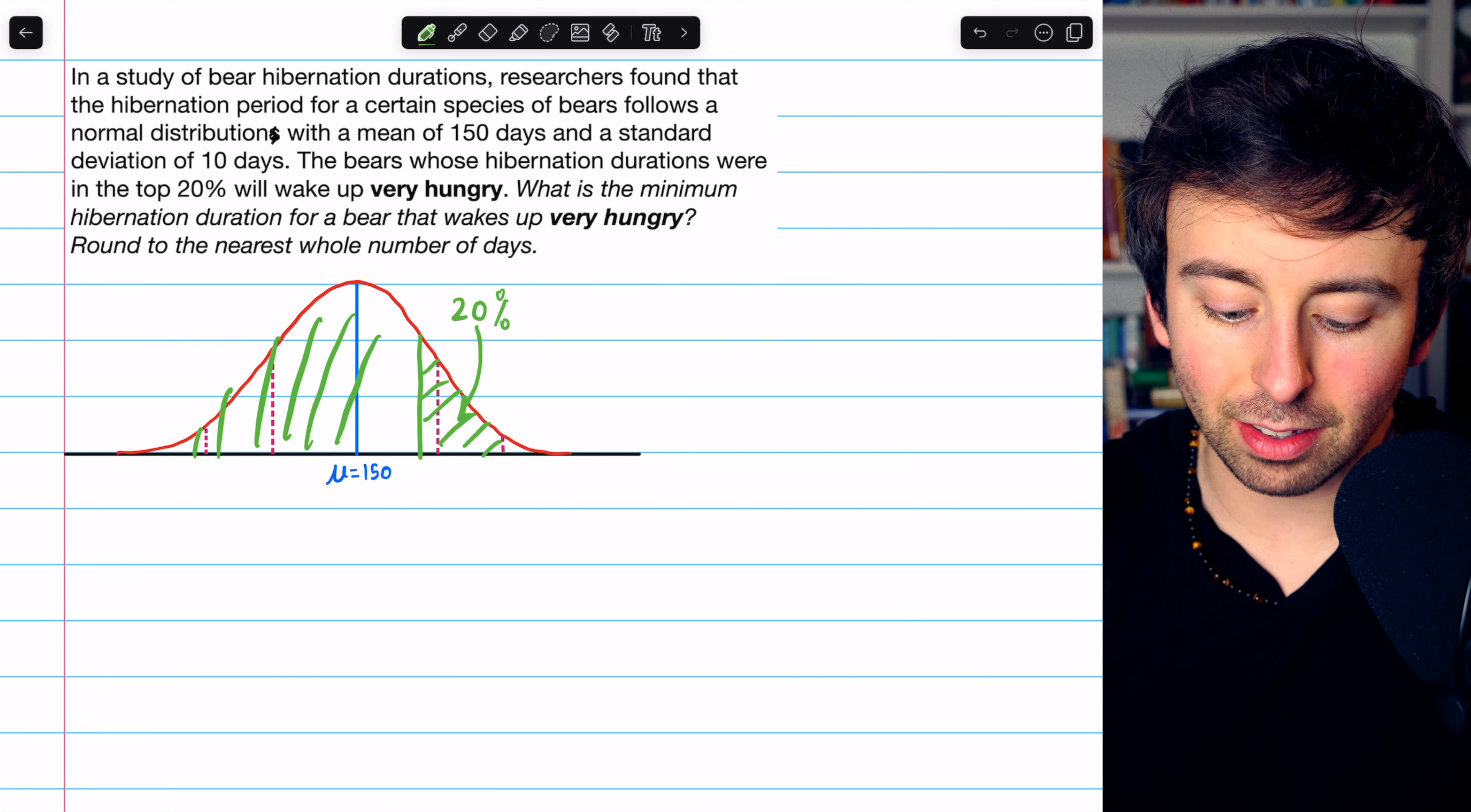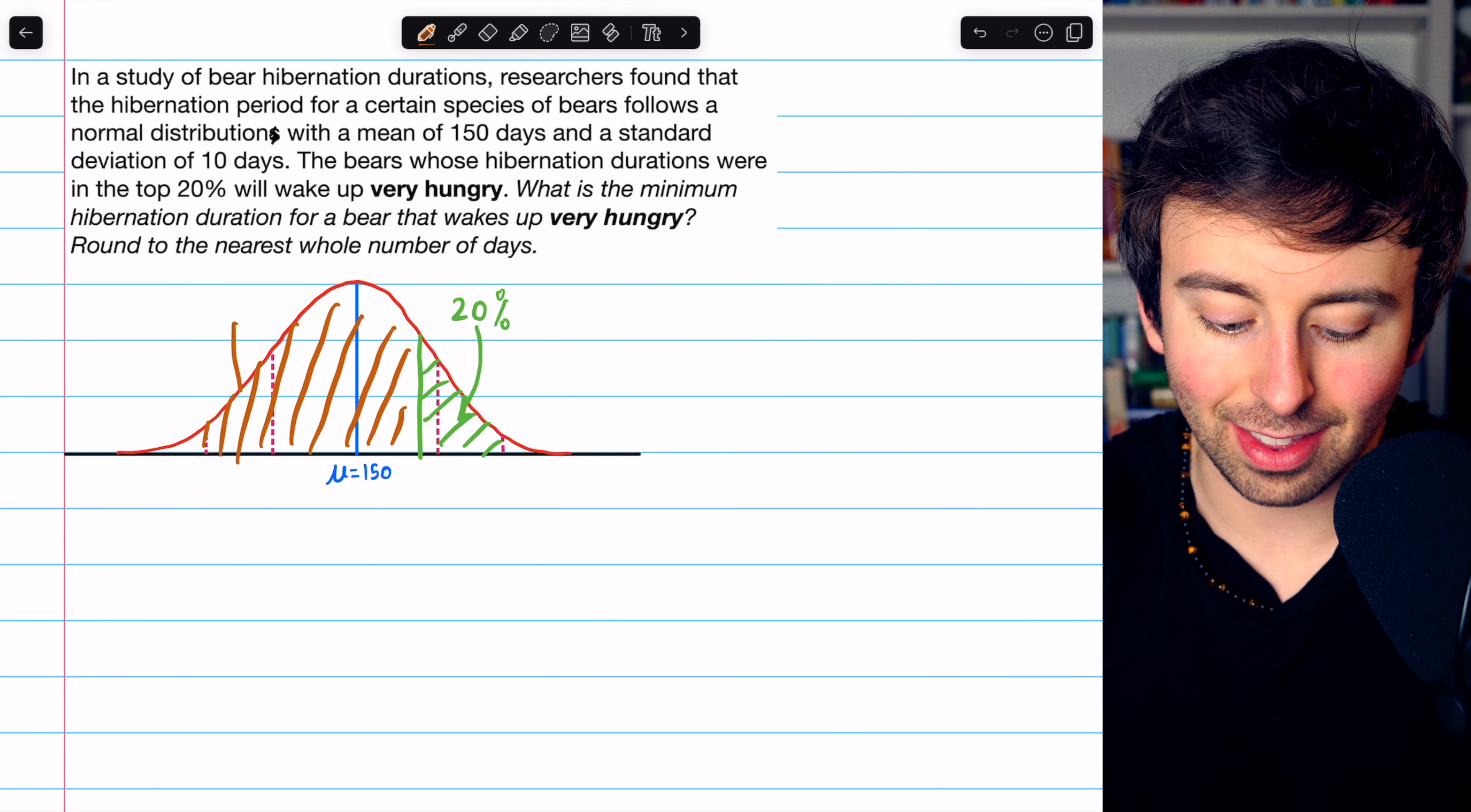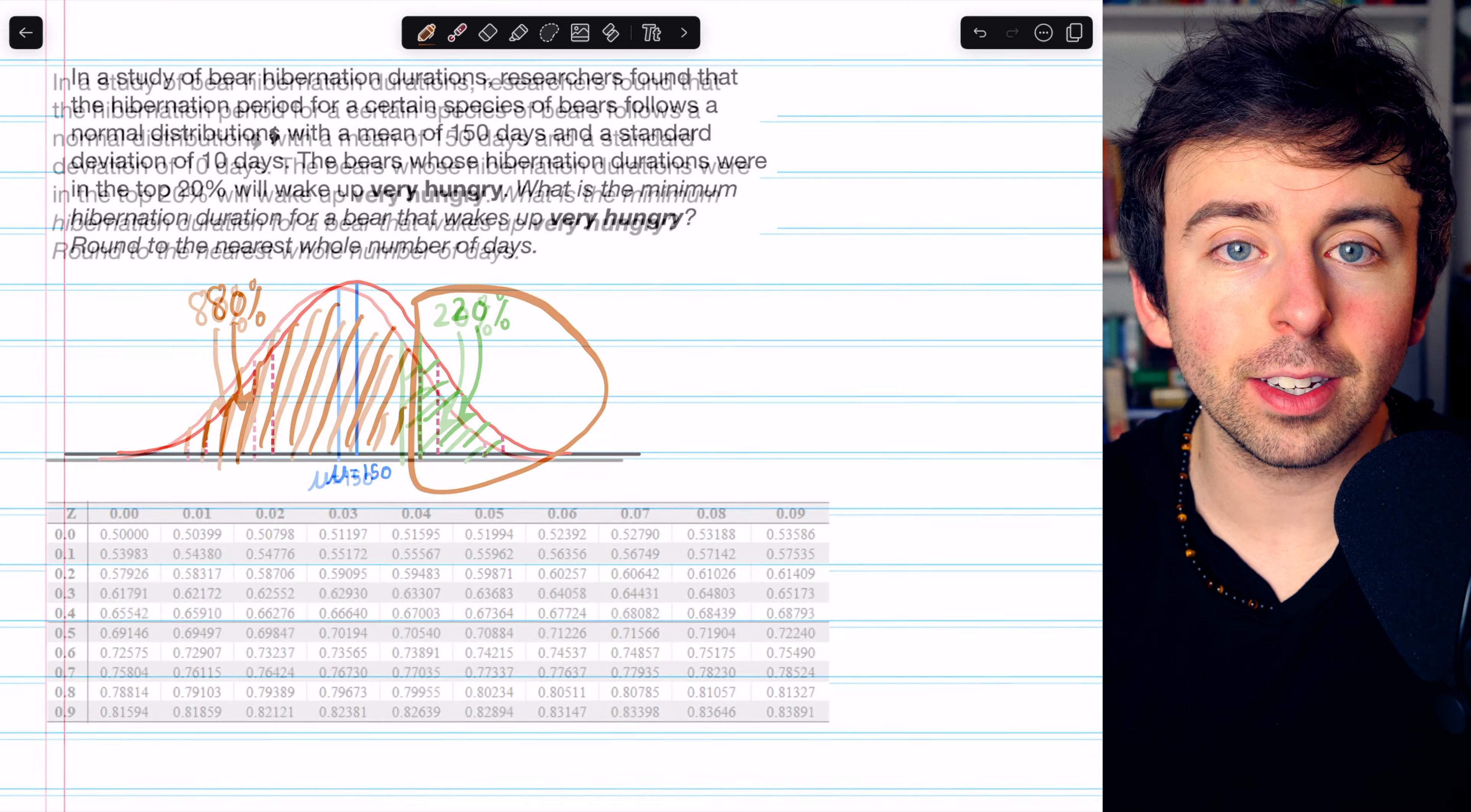That's the rest of the data, since we want the upper tail to have 20%. Remember, this is because we're looking for the minimum hibernation duration for a bear that wakes up very hungry.